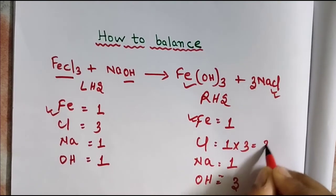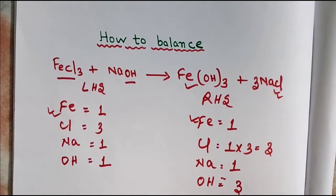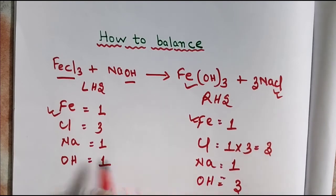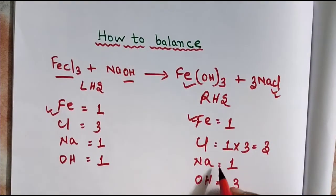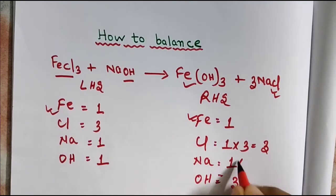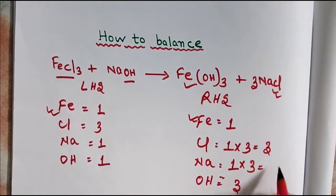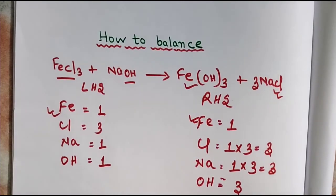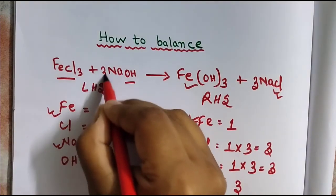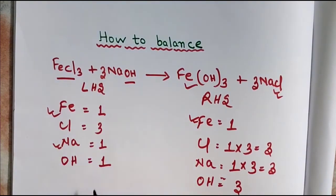Similarly for sodium, sodium also changes. 1 times 3 gives me 3 sodium atoms. But this sodium is not balanced, so if I put 3 in front of sodium hydroxide, then 1 times 3 gives me 3 sodium atoms.